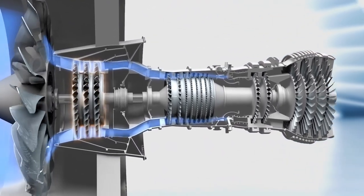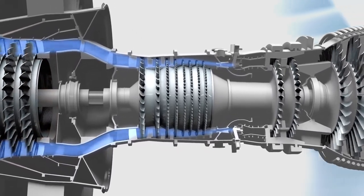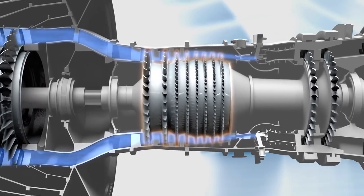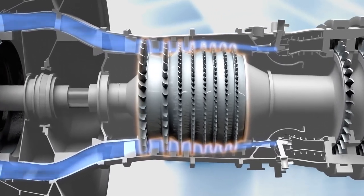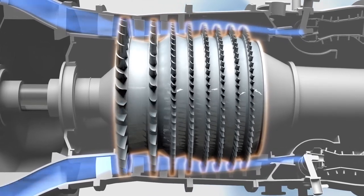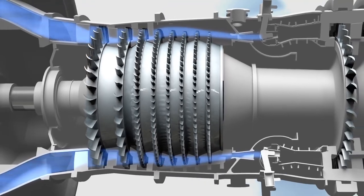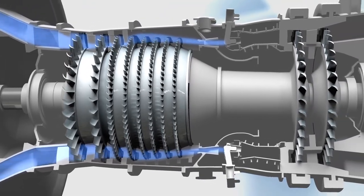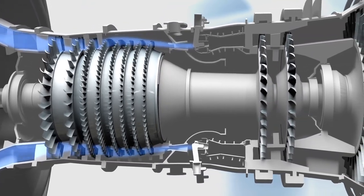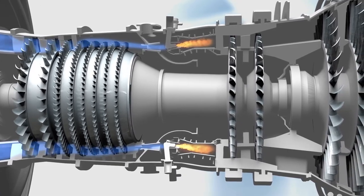It goes into a compressor, something like many household fans joined together. Each fan gets smaller and smaller as the blades squeeze the air into a tighter and tighter space, compressing the air like you would squeeze a balloon, until that squeezed air is mixed with jet fuel, a kind of super gasoline.